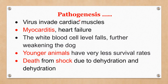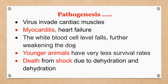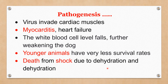Continuing pathogenesis: the virus invades the intestine and cardiac muscle, producing myocarditis due to two reasons — parvoviral myocarditis and bacterial myocarditis — resulting in heart failure. White blood cell levels decrease, the dog becomes exhausted, and very young animals have a very low survival rate when the heart is affected. Death occurs due to two reasons: shock from severe dehydration and heart failure.